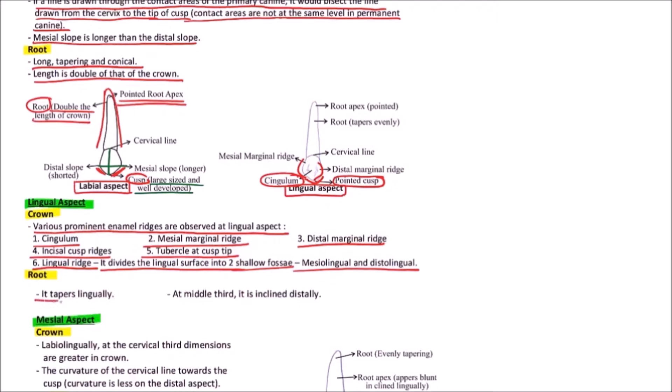The root tapers lingually, and at the middle third it is inclined distally. This is the root apex which is pointed, and the root is tapering evenly. There may be a mild inclination towards the distal side.